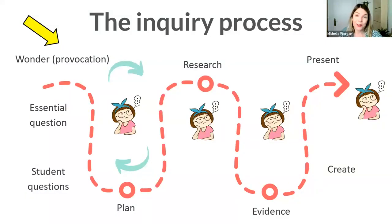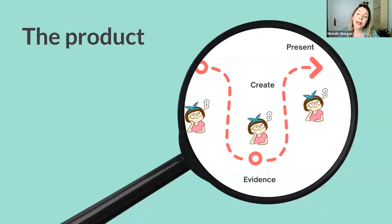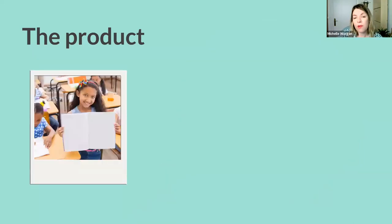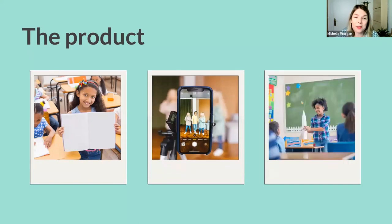Now students have got some information from these activities. They have evidence that backs up their answers to the essential question. So what are they going to do next? They're going to create a product to share with the class. Students can choose to demonstrate their learning in different ways — a presentation, a poster, a book, a video, a performance, a demonstration, or just a picture. Allowing students choice here is a great way of differentiating.